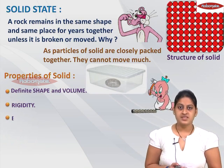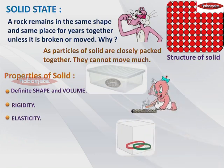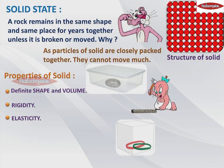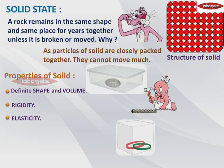The second point is about elasticity. What comes to mind when I say elasticity? It's the rubber band. Some solids change their shape when you apply external pressure on them, but when you remove the external pressure, they go back to their original shape, and this property is known as elasticity. Just like a rubber band — when you stretch it, it changes its shape, but when you remove that pressure, it comes back to its original shape.